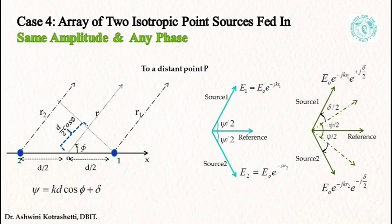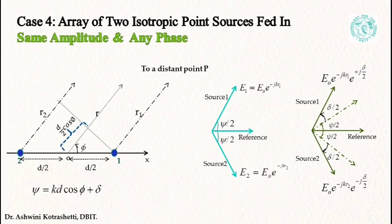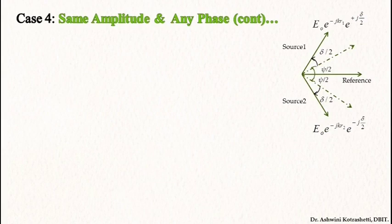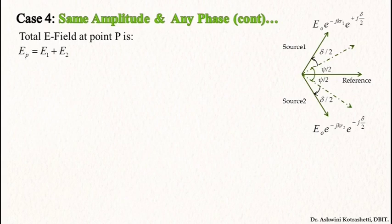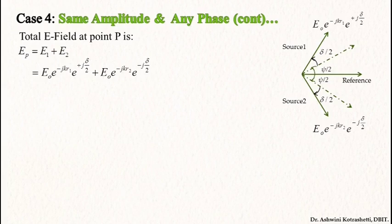I am showing it in terms of r1 and r2. Let us begin with our mathematical computation to find the net electric field at a distant point P. Using the vector diagram, the total field is given by eP equal to e1 plus e2. I will substitute for e1 and e2 and subsequently substitute for r1 and r2 using the far field approximations.